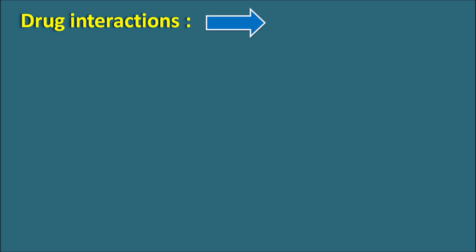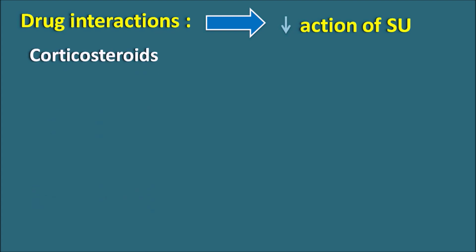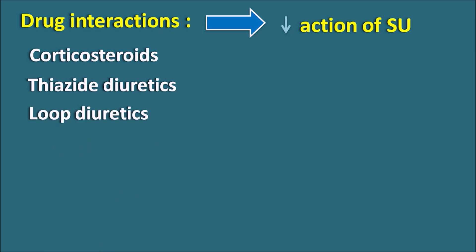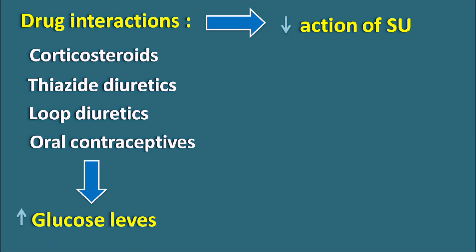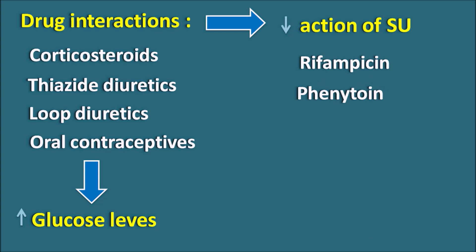Some drugs decrease the action of sulfonylureas, resulting in hyperglycemia. For example, corticosteroids, glucocorticoids, thiazide diuretics, loop diuretics, and oral contraceptives increase glucose levels through their intrinsic properties, thereby opposing the actions of sulfonylureas. Additionally, enzyme inducers like rifampicin and phenytoin can induce metabolic enzymes, increasing the metabolism of sulfonylureas and resulting in their decreased action and hyperglycemia.